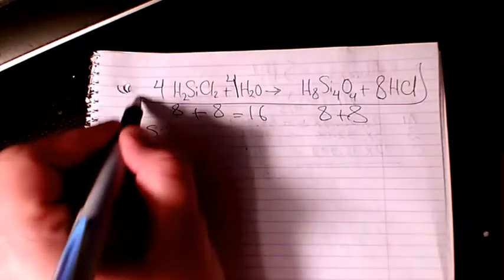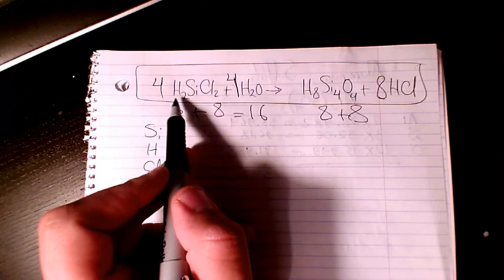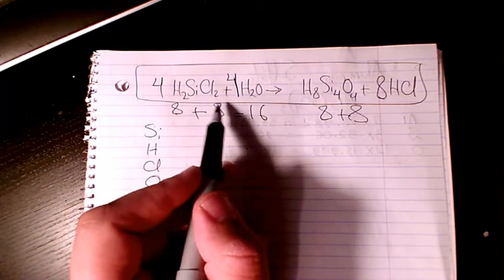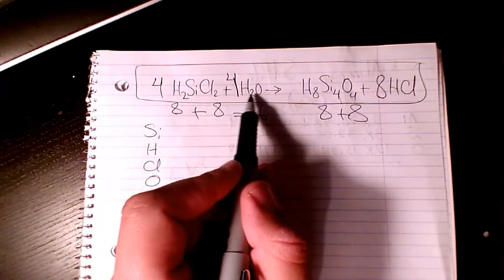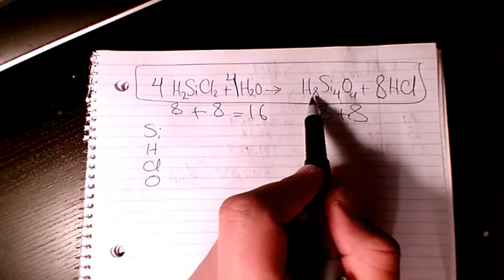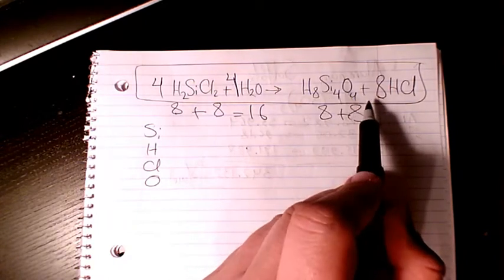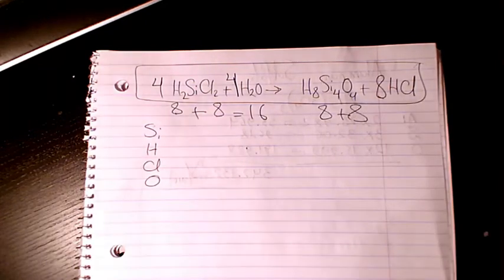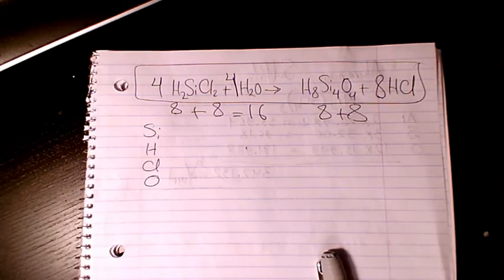So that's balanced. It means that four moles of H₂SiCl₂ will react with four moles of water and gives you one mole of H₈Si₄O₄ plus eight moles of HCl. I hope you liked this video — please leave me a comment if you have any question and I'll get back to you as soon as I can.